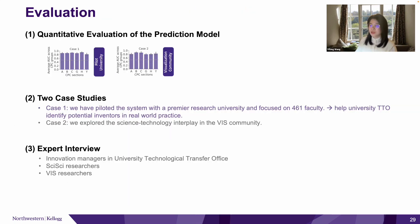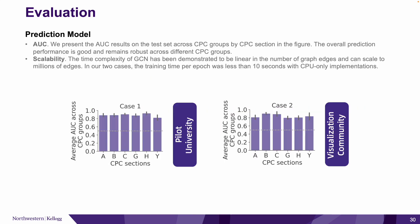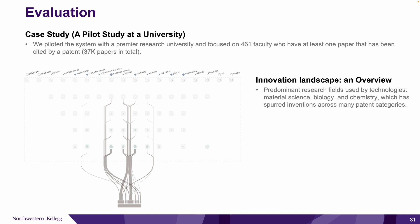For the evaluation, we first report the prediction model performance. We also introduce insights from a case study. We evaluate the model using two datasets used in our two case studies. We can see that the overall AUCs are all above 80%, indicating good prediction performance. For the case study, we share some interesting findings during our pilot study at our collaboration university. Overall, in this university, material science, biology, and chemistry are three predominant disciplines whose knowledge has spurred inventions across many patent categories.